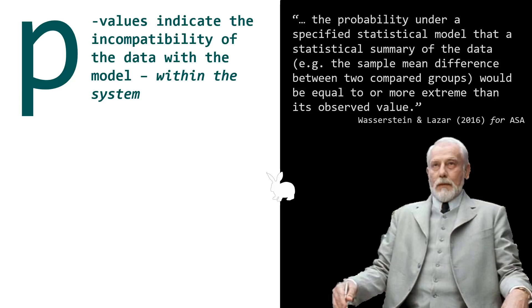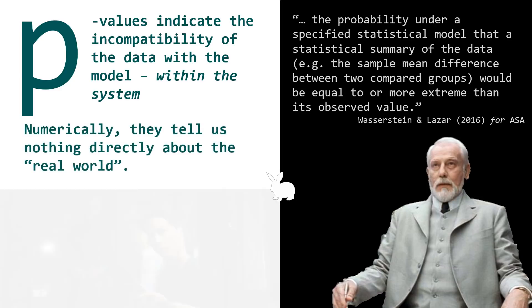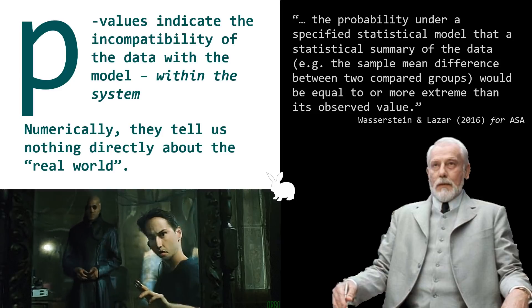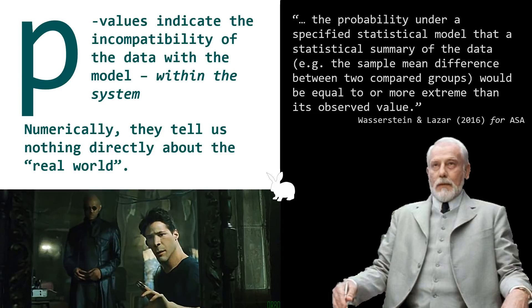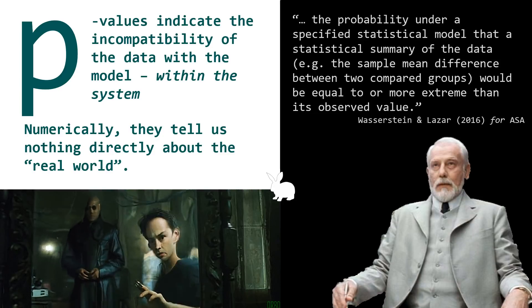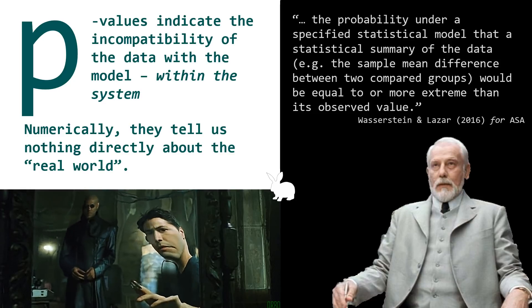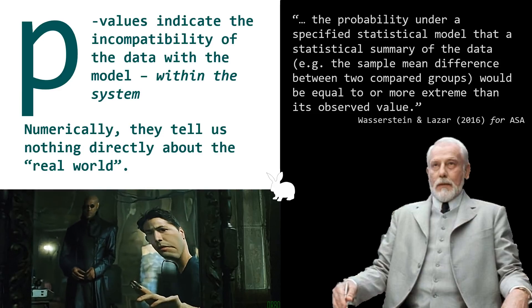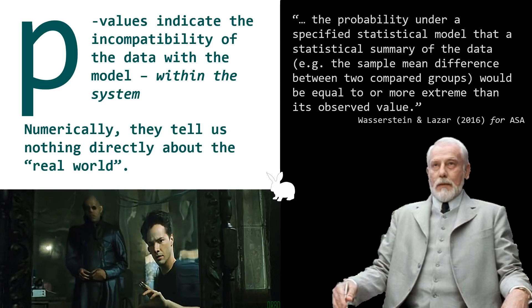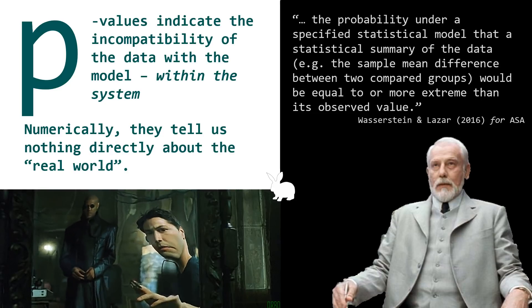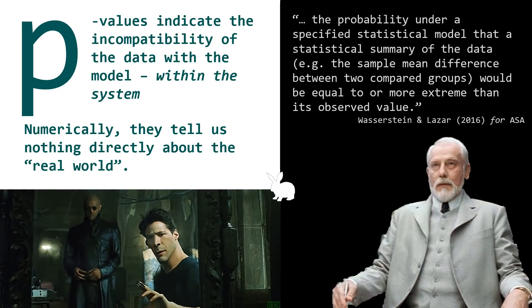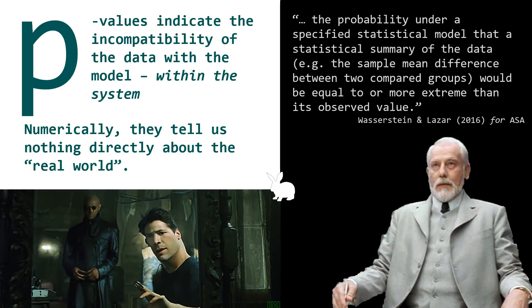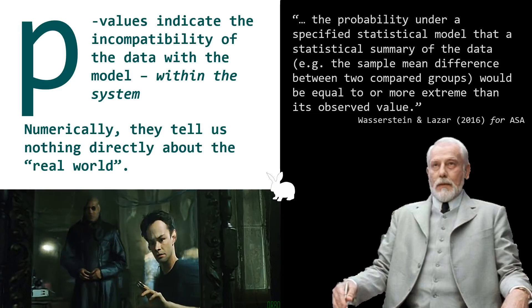The smaller the P, the rarer the event. Imagine yourself as an inhabitant within the matrix: a small value of P indicates that something rare occurred, assuming the truth of the rules of the matrix. If the event was unusual enough in the right context, we might conclude that it is the assumptions and rules of the system that are wrong. In the analogy, we see the truth that we are caught in the matrix and it doesn't explain the real world. Importantly, P is measured from within the system — it tells us how weird the data looks from inside the matrix, but it tells us nothing directly about how real the real world is.